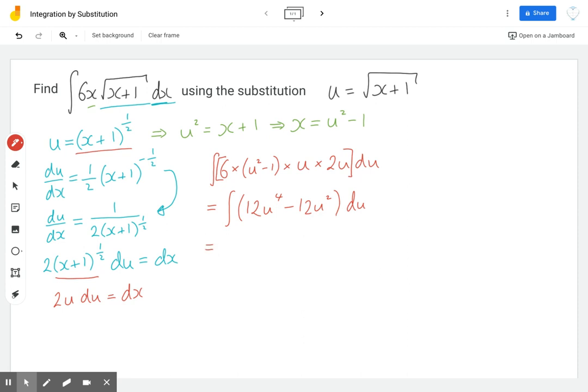Now we can integrate. So adding 1 to the power and dividing, so 12u to the 5 over 5 take away 12u cubed over 3 plus constant of integration. So let's just simplify that to write as 12 fifths u to the 5 take away 12 thirds is 4, so 4u cubed plus c.